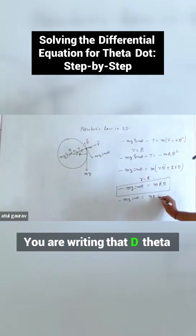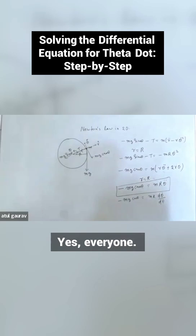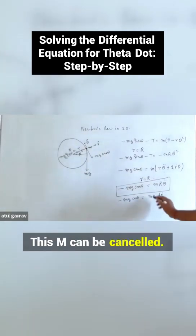What do you write? You're writing d theta dot upon dt. Can you write this? Yes, everyone? Yes, sir. This m can be cancelled.